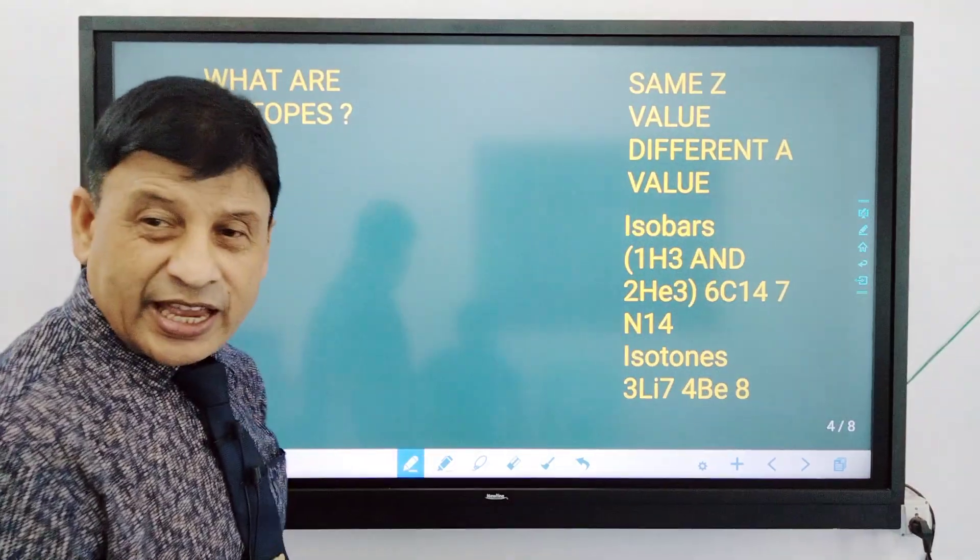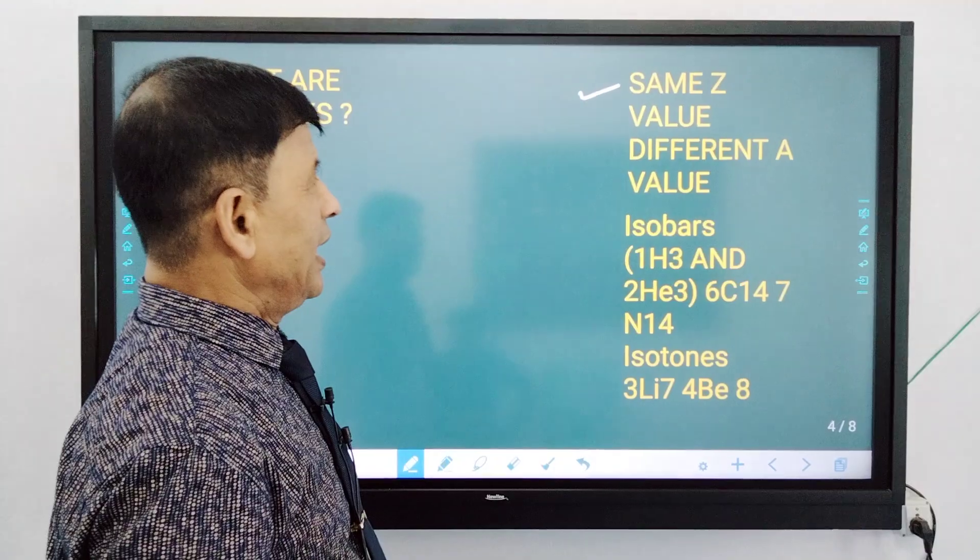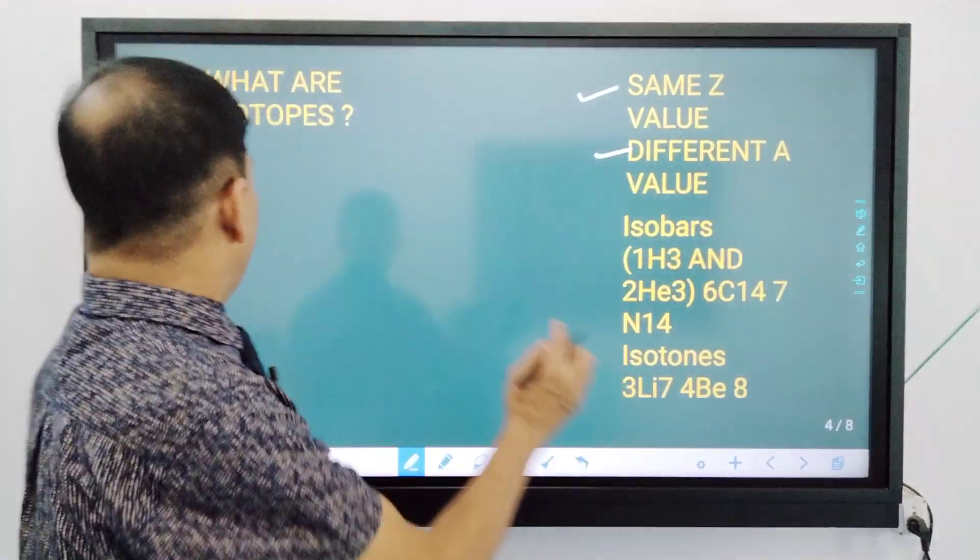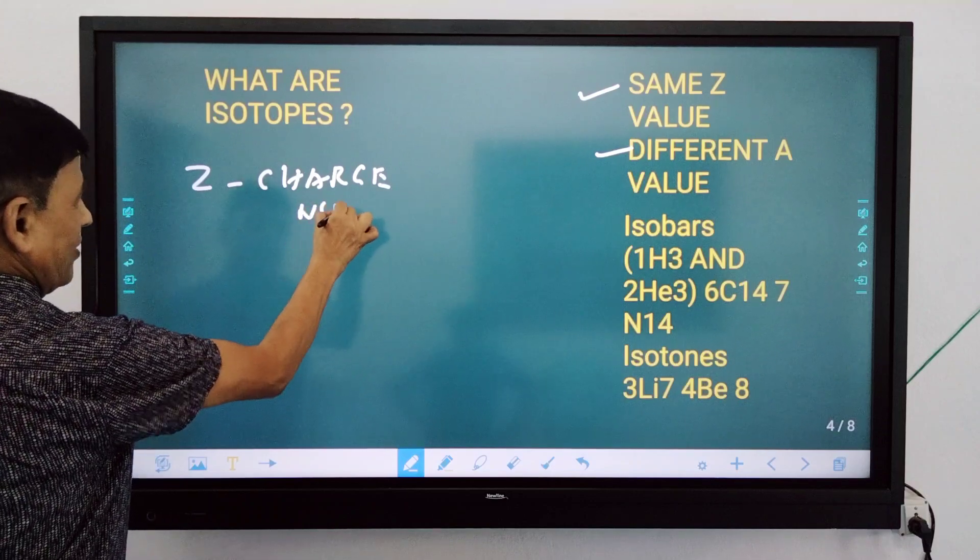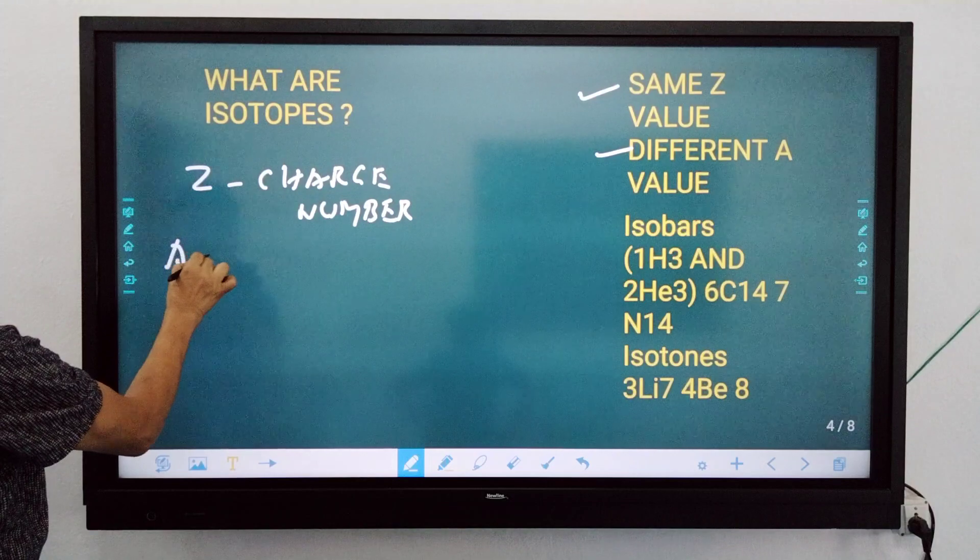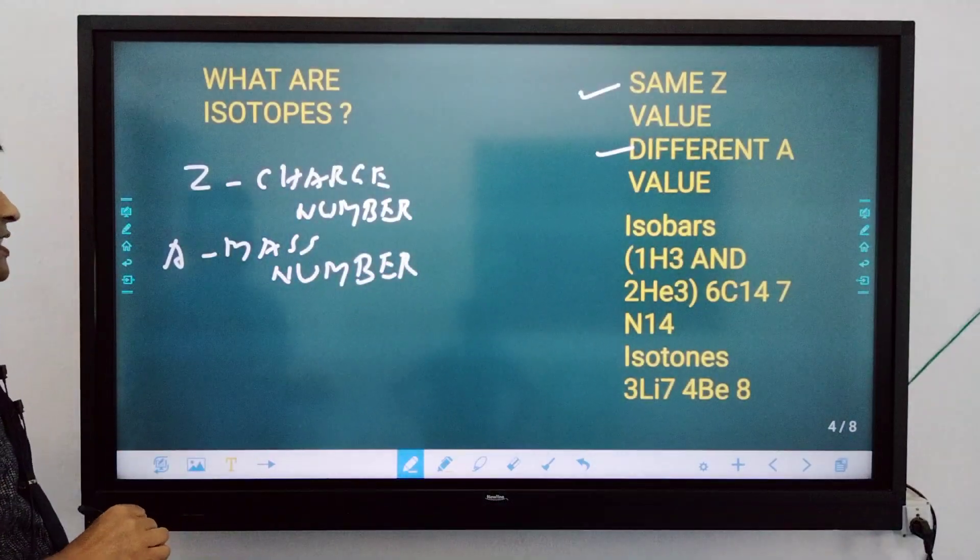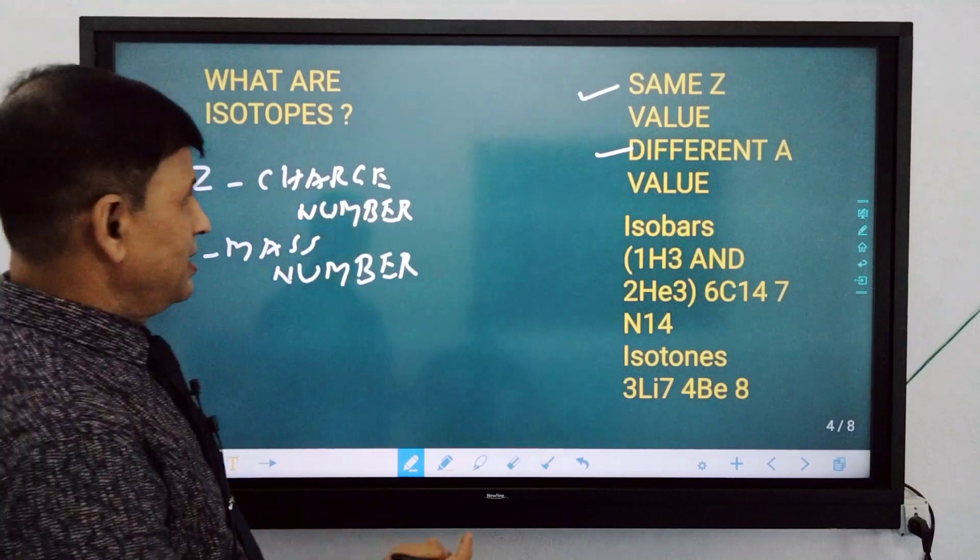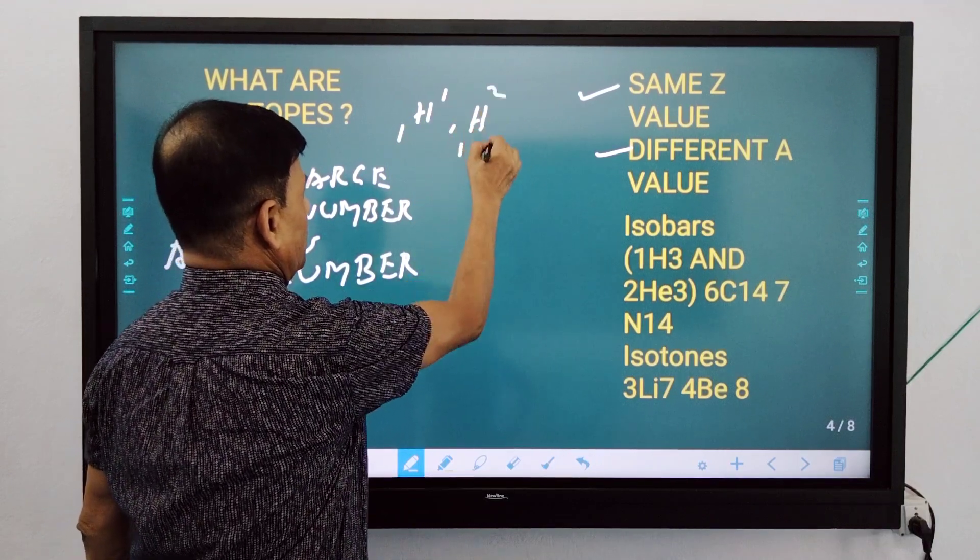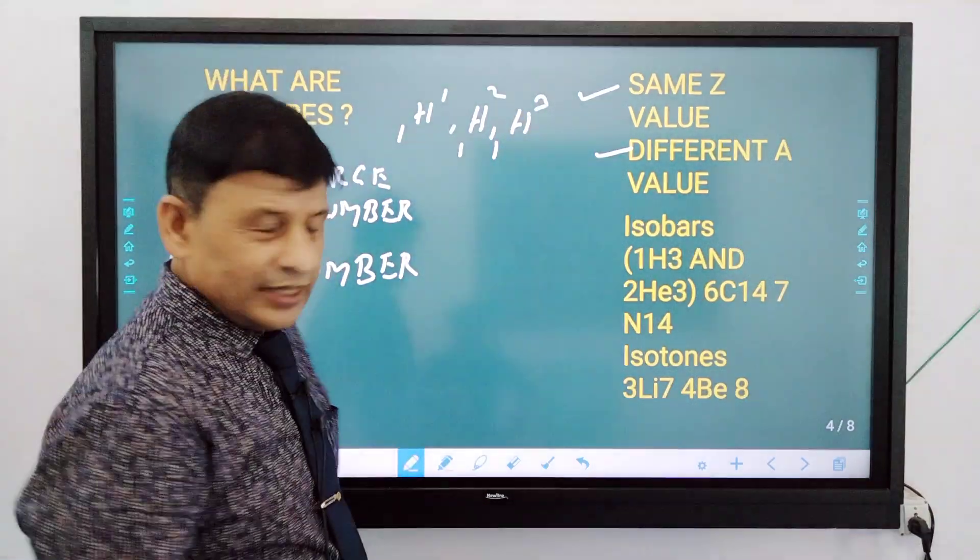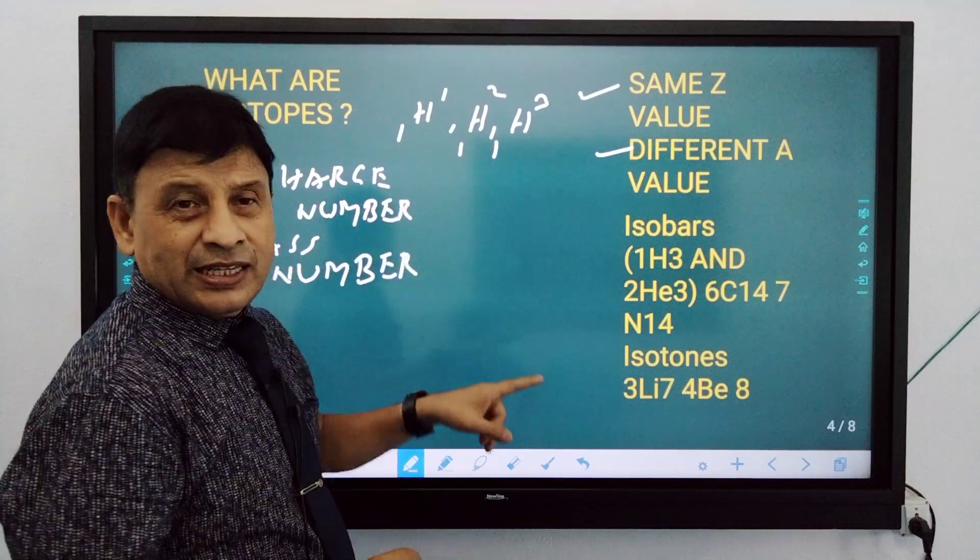Next, what are isotopes? Isotopes are the same Z value and different A value. Z means charge number, A means mass number. Same Z, different A. For example, hydrogen: H1, H2, H3. We have seen that the charge number is 1, 1, 1. The charge number is same.